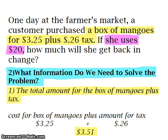Let's look at step one: the total amount for the box of mangoes plus tax. In our problem, it states that the box of mangoes was $3.25 and the tax is $0.26. We will need to add those together to find the total amount. $3.25 plus $0.26 is equal to $3.51. So the total amount for the box of mangoes and tax is $3.51.